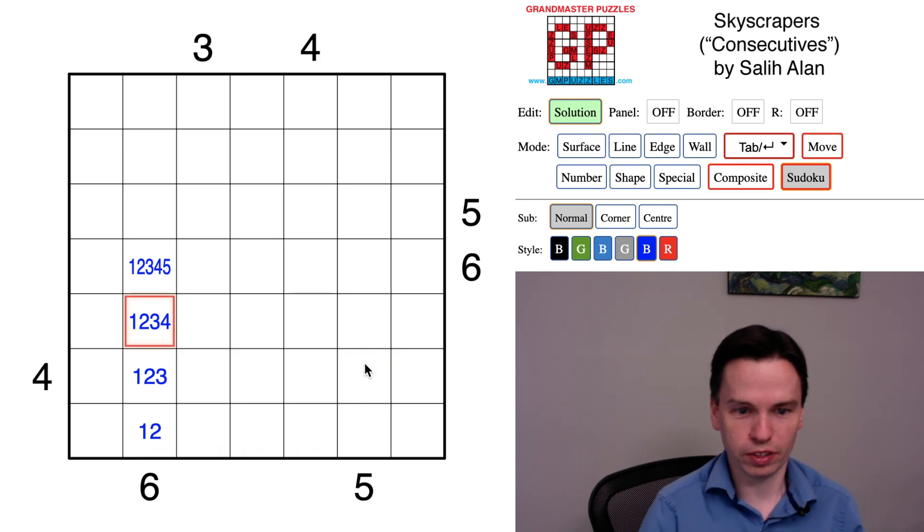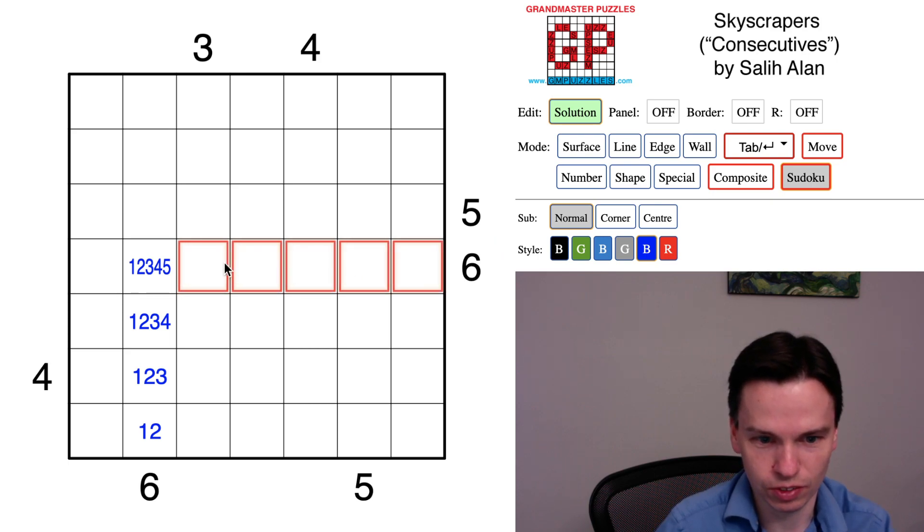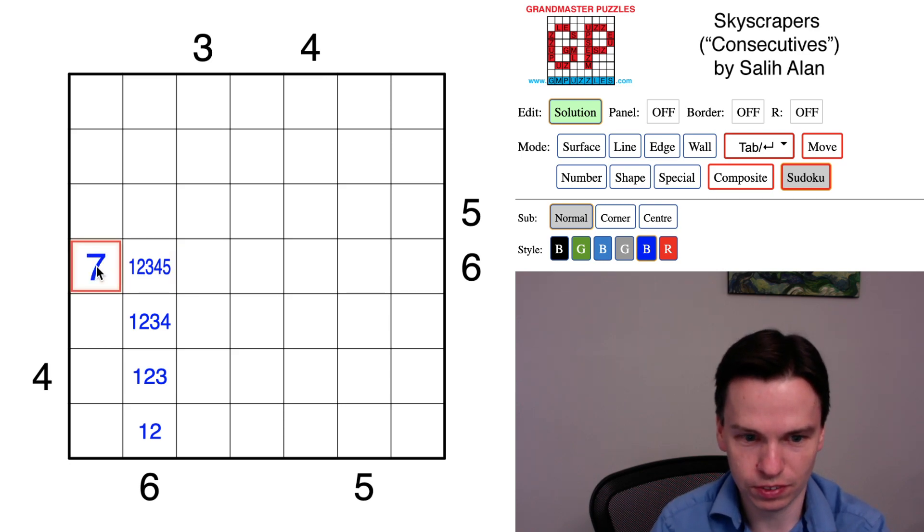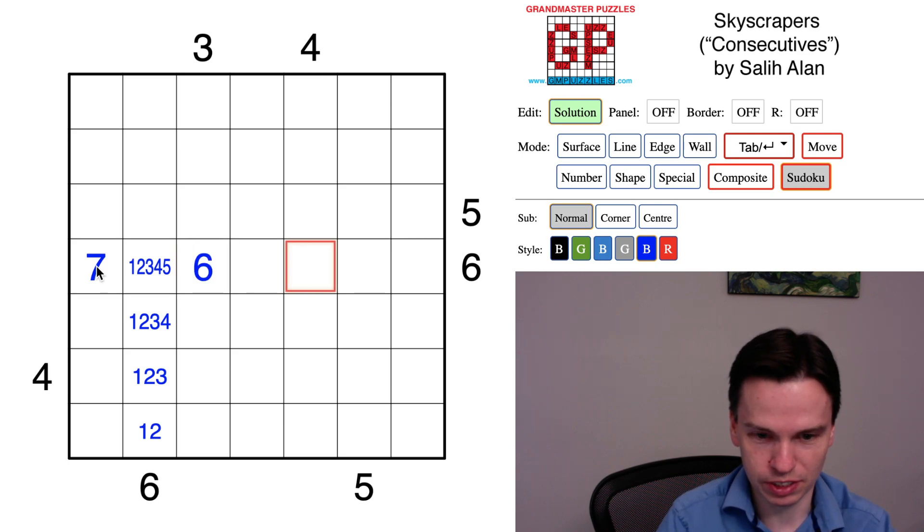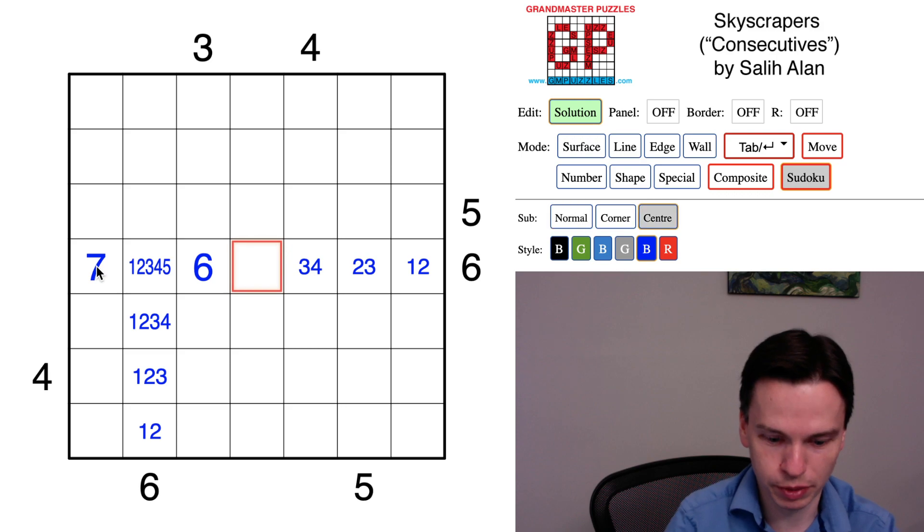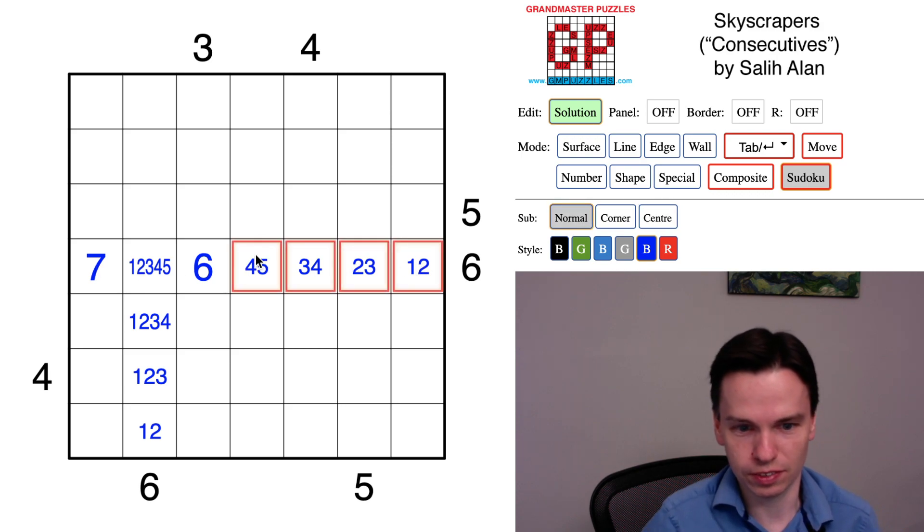And so why this matters is that this six needs to see a total of six buildings. When you're more than five cells away with the building no taller than five, this is always a hidden position. So the seven and the six must be seen in these spaces, we've got to have an escalating series like this coming up the grid. And this is how we see one, two, three, four, five, six buildings.